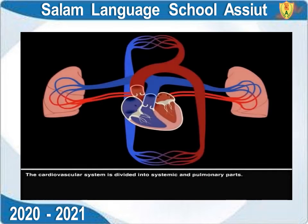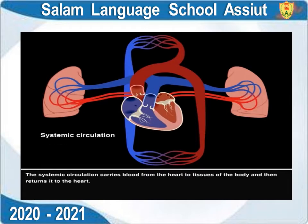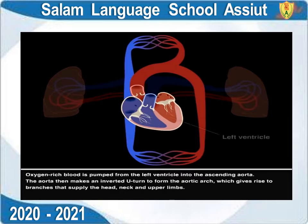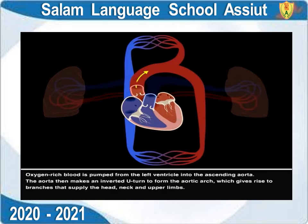The cardiovascular system is divided into systemic and pulmonary parts. The systemic circulation carries blood from the heart to the tissues of the body and then returns it to the heart. Oxygen-rich blood is pumped from the left ventricle into the ascending aorta.